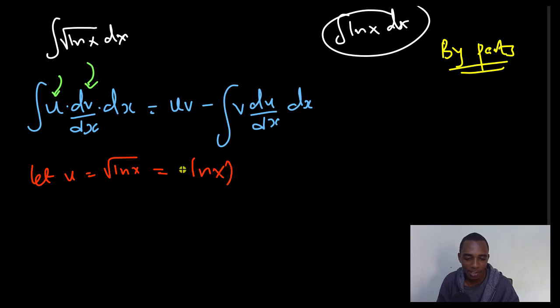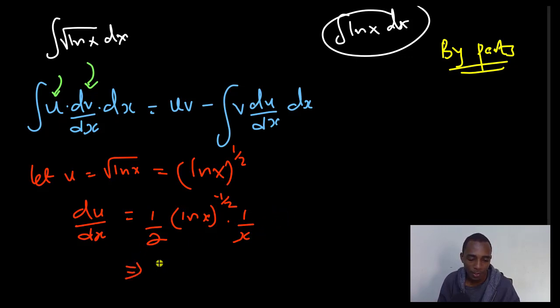This is the same as ln x to the power 1/2. If I take the derivative of u with respect to x, I drop this power here, then I reduce the power by 1. So 1/2 ln x, I reduce the power by 1, that's negative 1/2, times the derivative of whatever is in the brackets here. The derivative of ln x is 1 over x. So this is 1 over 2x times the square root of ln x. This is du dx.